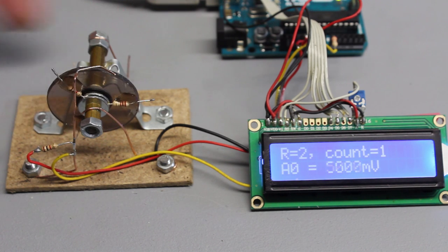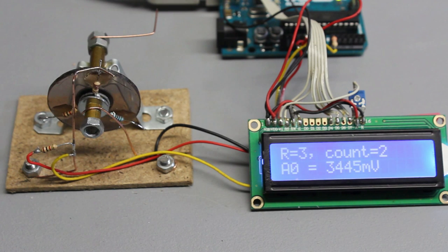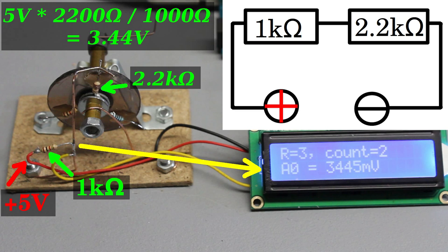If opened, the voltage reading is 5000mV again. And when making contact with the 2.2kΩ resistor we get 3445mV. In theory we get an output of 3.44V across a voltage divider composed of a 2.2 and a 1kΩ resistor at 5V input voltage.